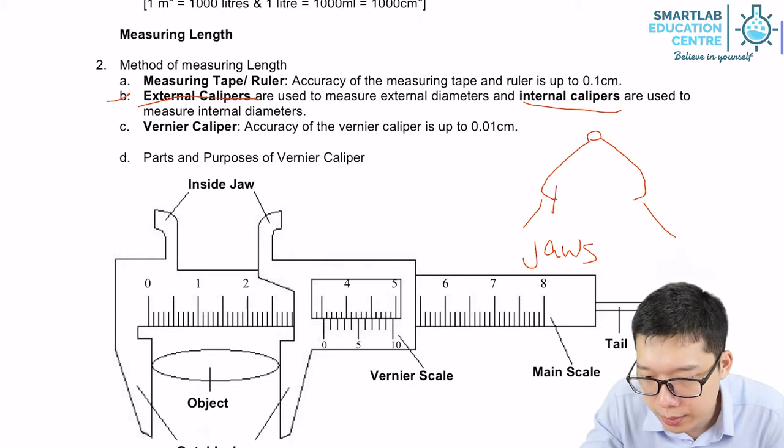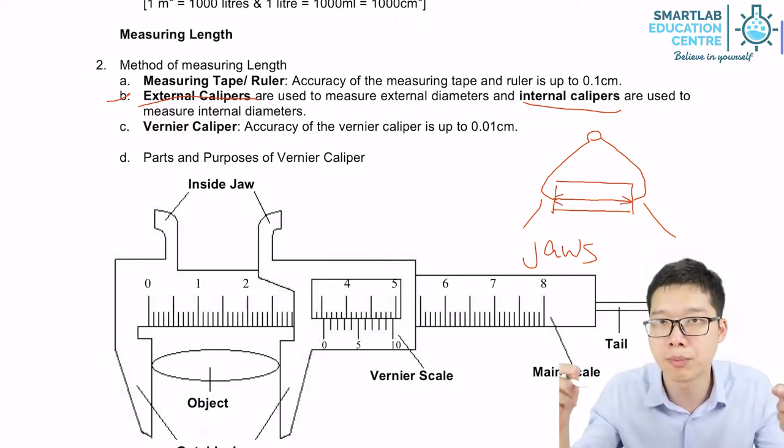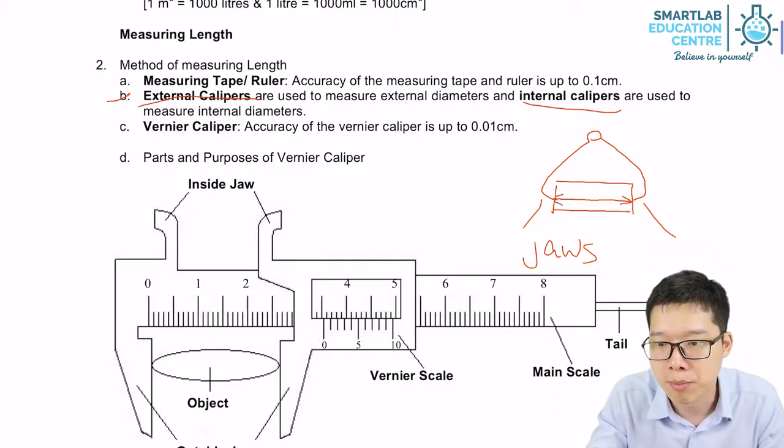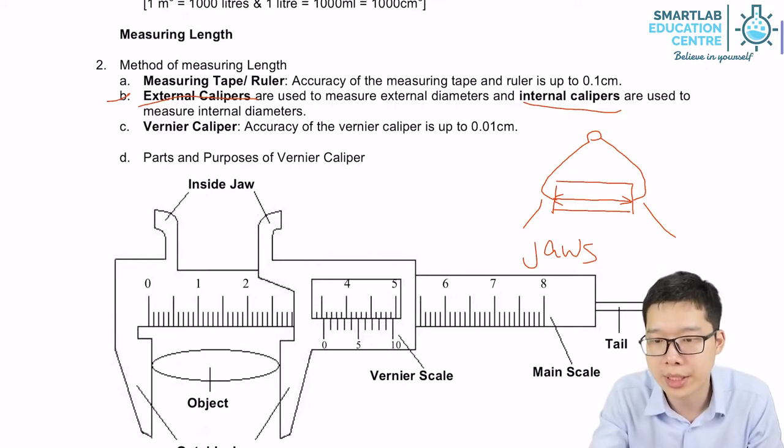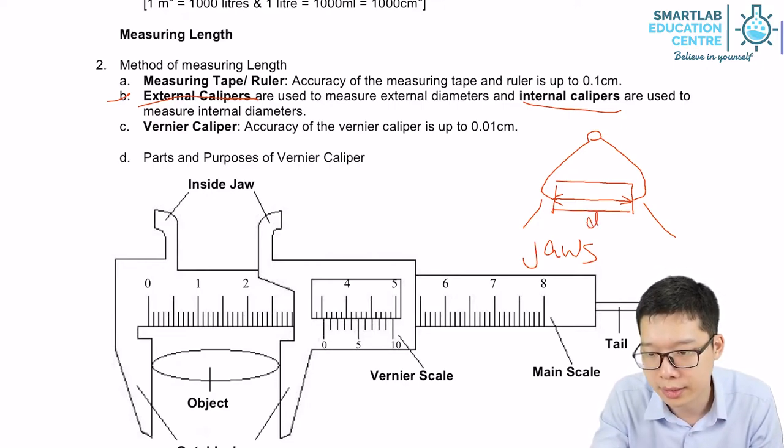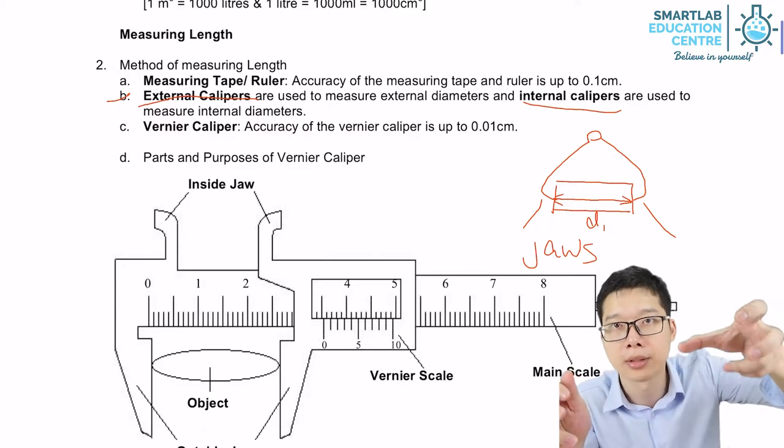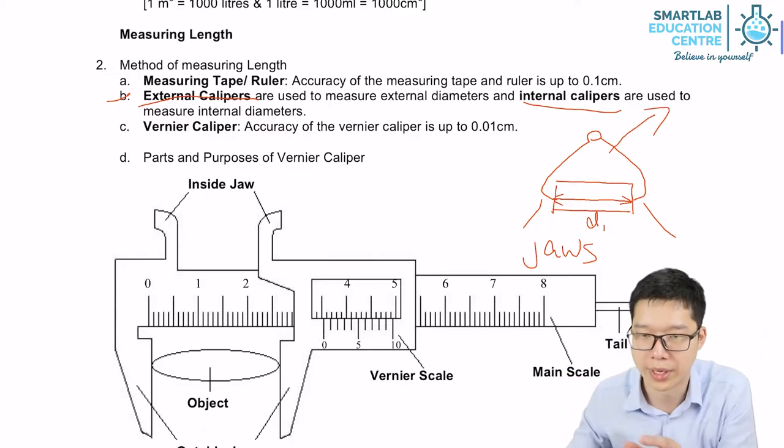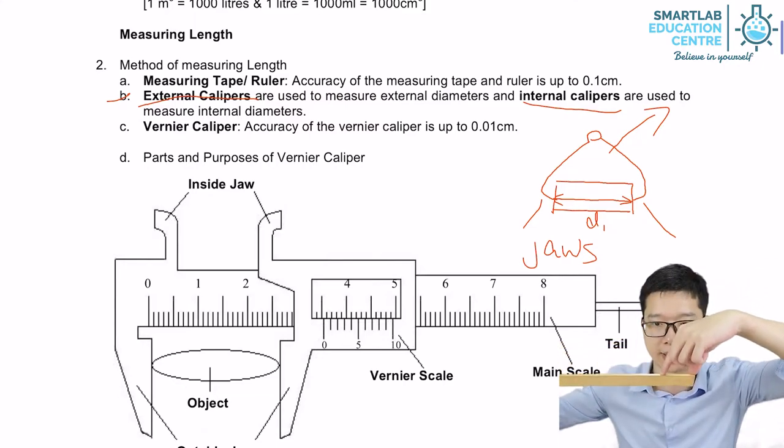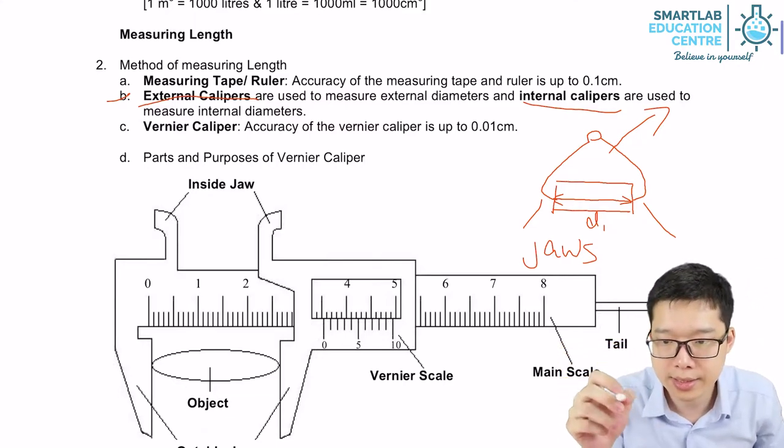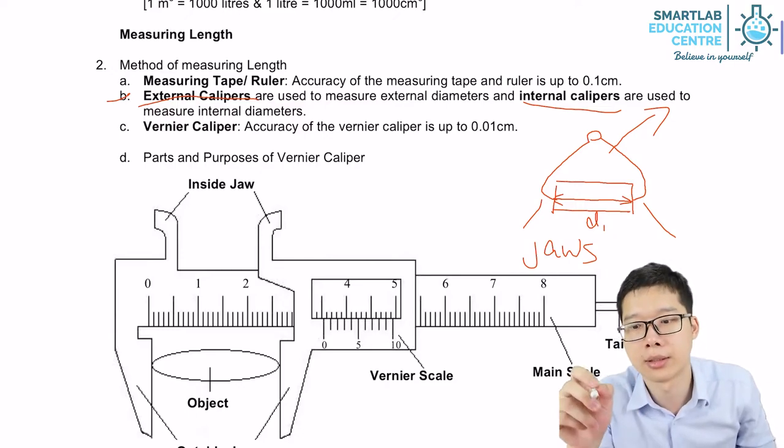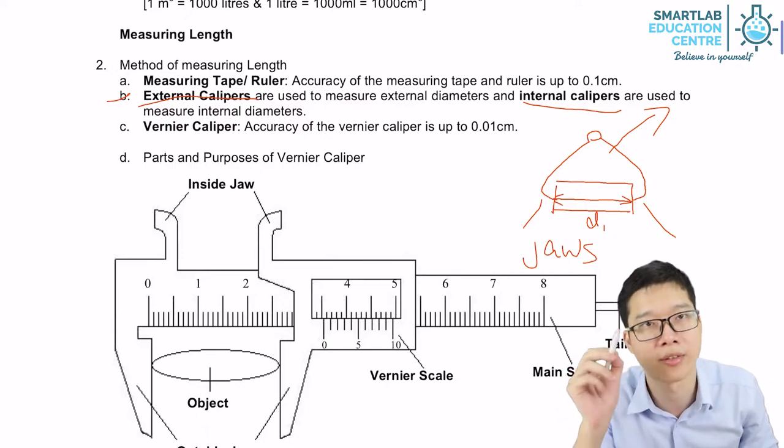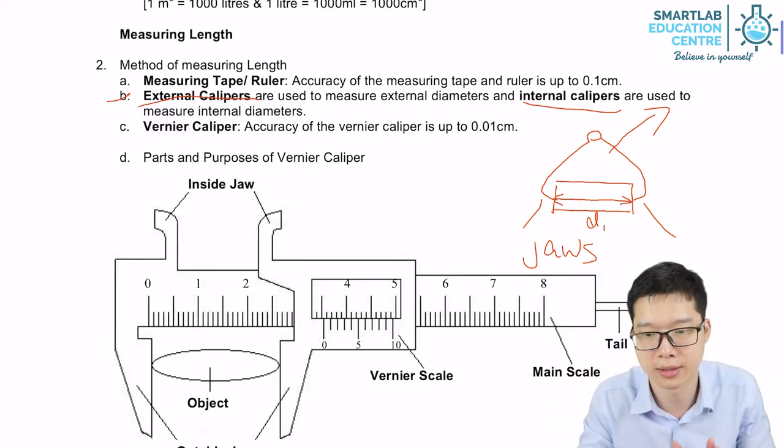How do you use it? You clip the item you want to measure in between and maintain the distance. Use a ruler to measure the distance, let's call it D1. After you clip your item, you take the caliper away and use a ruler to measure to get the length. Since your measurement is still done by ruler, the precision level is still up to 0.1 cm.